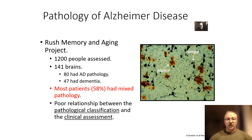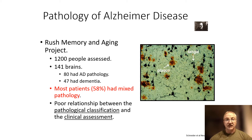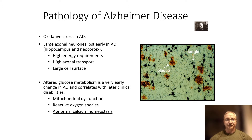If we look at the Rush Memory and Aging Project, which is going to look at 1,200 brains at death, the first 141 brains showed a high proportion of mixed pathology. This is something I'm trying to get across: how common mixed pathology is in what we have clinically defined as one type of dementia or another. They explicitly said there was a poor relationship between pathological classification and clinical assessment.